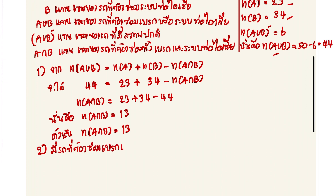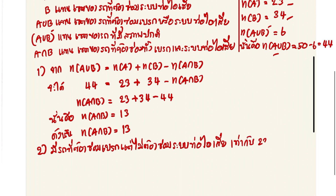ข้อที่สอง มีรถที่ต้องซ่อมเบรก แต่ไม่ต้องซ่อมระบบท่อไอเสีย เท่ากับ 23 ลบ 13 เท่ากับ 10 คัน